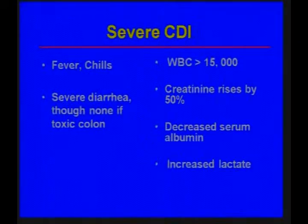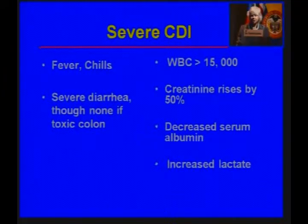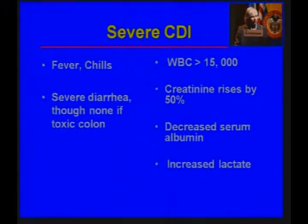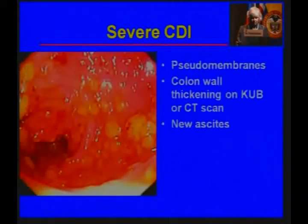Some of the clinical signs to look for: fever or chills, severe diarrhea — although if the patient has a toxic colon, they may have no diarrhea at all. Elevated white blood cell count is very often seen with Clostridium difficile infection because the toxin actually acts as an attractant for white blood cells. When the creatinine goes up, your patient has severe disease. Albumin drops very quickly, and if there's an increased lactate, you worry about severe disease.